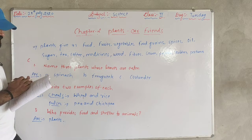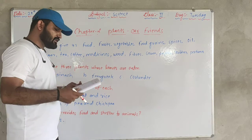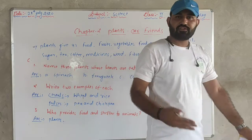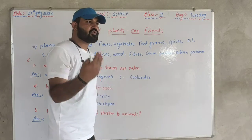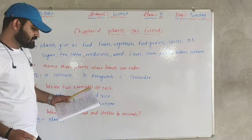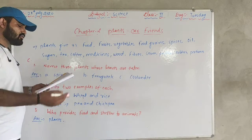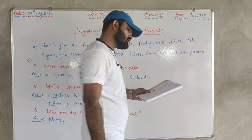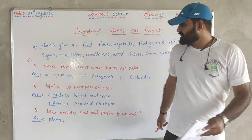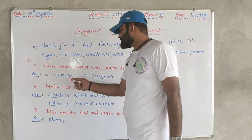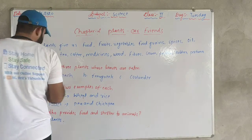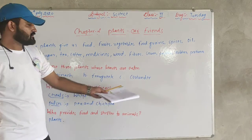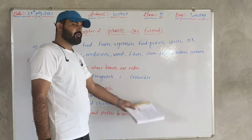First question: name three plants whose leaves are eaten. Three plants whose leaves are eaten are: first, spinach; second, methi (fenugreek); and third, coriander (dhania).